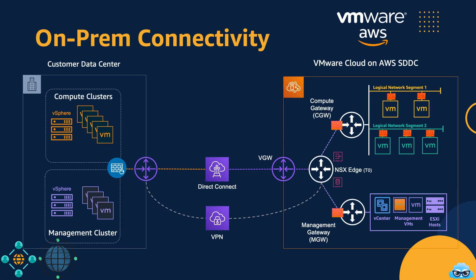This slide illustrates the connectivity between your on-premises data center and the SDDC within VMware Cloud on AWS, providing a visual representation of the architectural diagram we've explored and emphasizing the seamless communication enabled through various connectivity options.